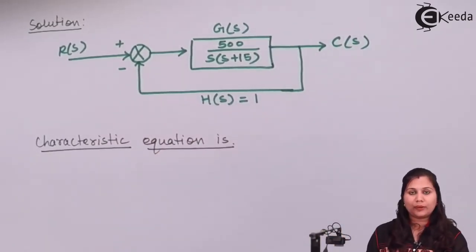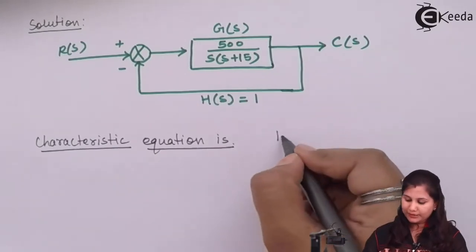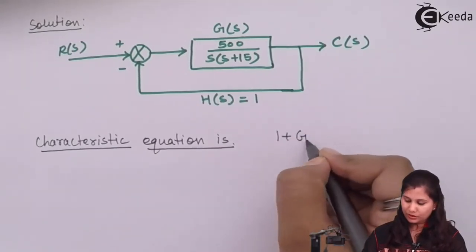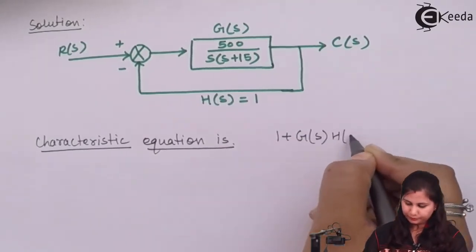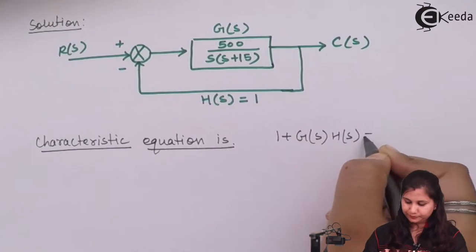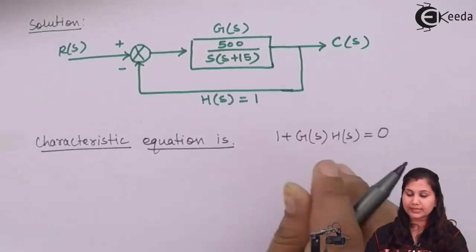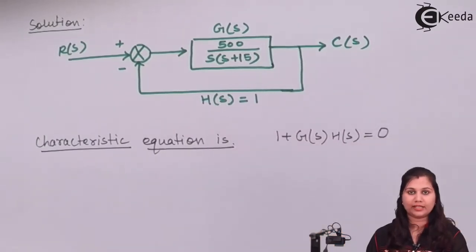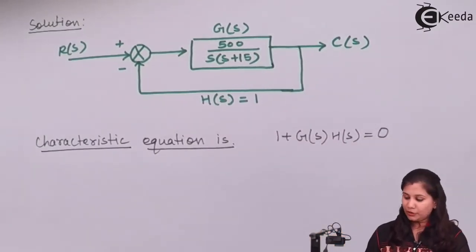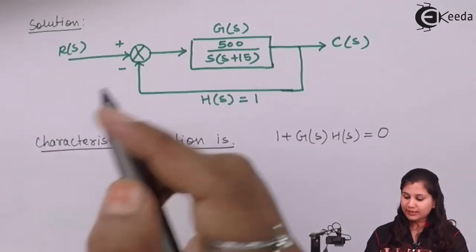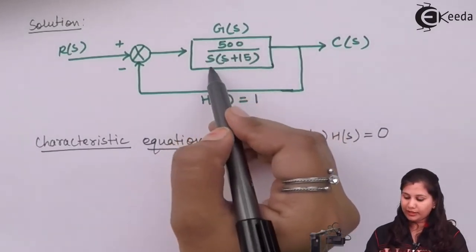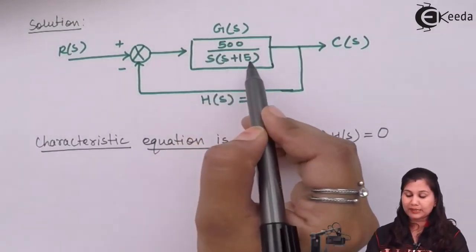The characteristic equation is given by 1 plus G(s)H(s) equals zero. This is the characteristic equation for the system. G(s) is given to us as 500 upon s(s+15) and H(s) is given as 1, so we are going to substitute these values into the equation.